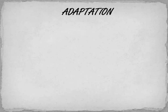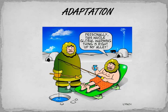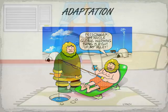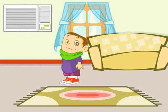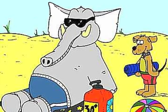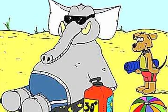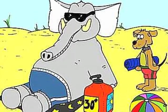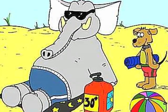All these attributes that enable organisms to better survive in their environment are called adaptations. We human beings have adapted very well to our habitat — air conditioners, warm clothes, umbrellas, suntan lotions: these are all examples of adaptations.